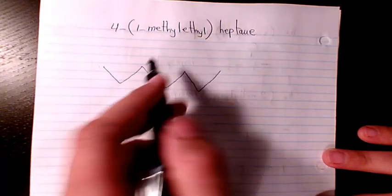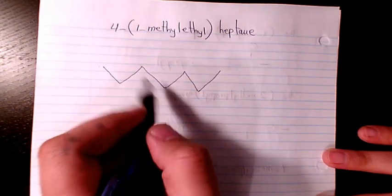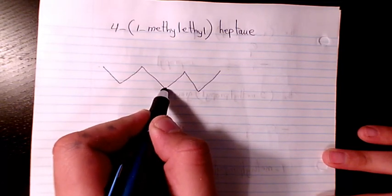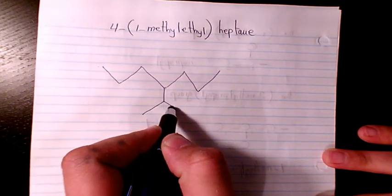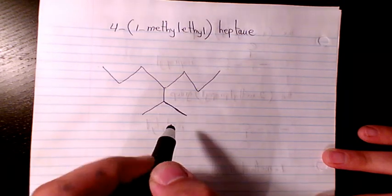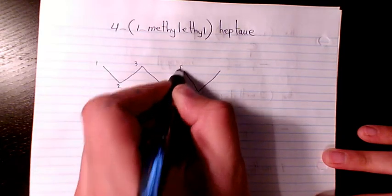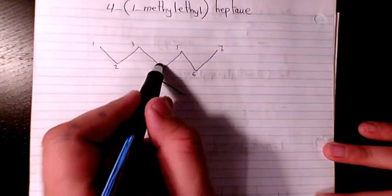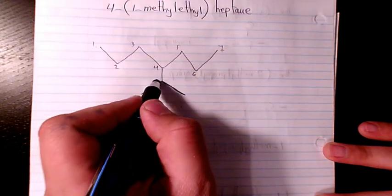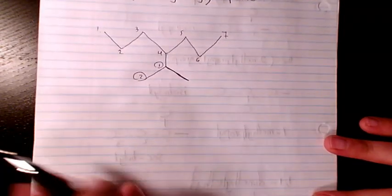Number four - one, two, three, four - and here we have 1-methylethyl. One, two - that's ethyl - and we have one methyl, that's the branch here. So one, two, three, four, five, six, seven - that's heptane - and at the fourth position we have one and two, that's ethyl, and we have one methylethyl. That's how we name it.